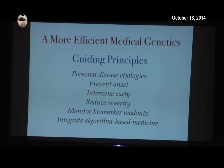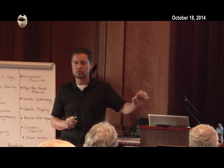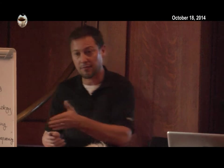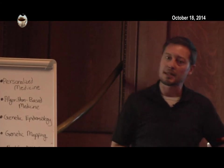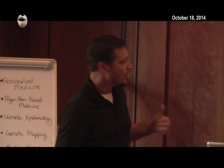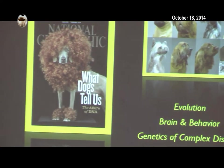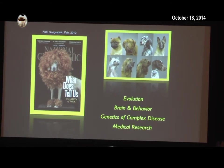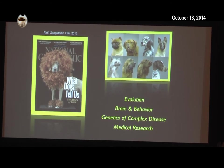Instead of reacting to a patient's disease, algorithm-based medicine predicts what may happen and constantly tries to change that outcome. If we think about a human lifespan of 100 years, that's difficult to do. If you think about a canine lifespan of typically 14 years, it's much more reasonable. So to summarize: the dog is a model for evolutionary biology, a model for brain and behavior, a model for understanding the genetics of complex disease, and also a model for translational research — using genetic knowledge to improve patient outcomes through improved diagnostics and therapeutics.